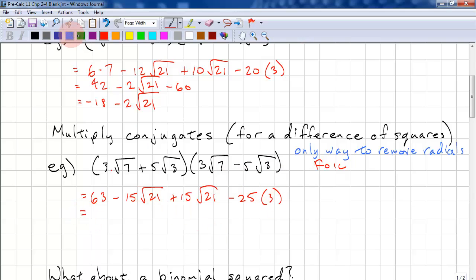I'll simplify. This goes away because we have a negative 15 and a positive 15. And they're both multiplied by root 21. So this is 75. 63 minus 75 is negative 12. And what you want to note here is no radicals in the answer.